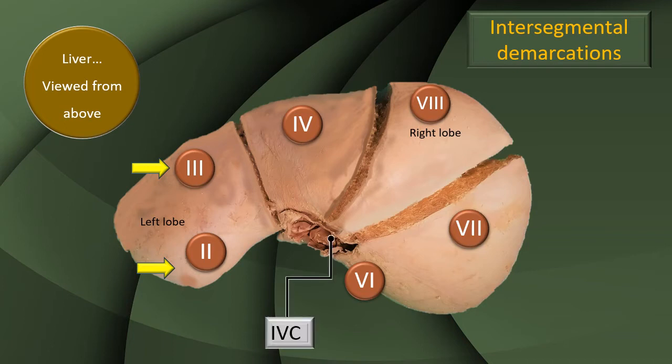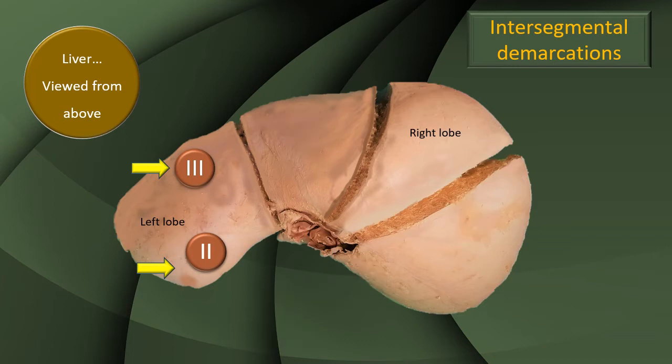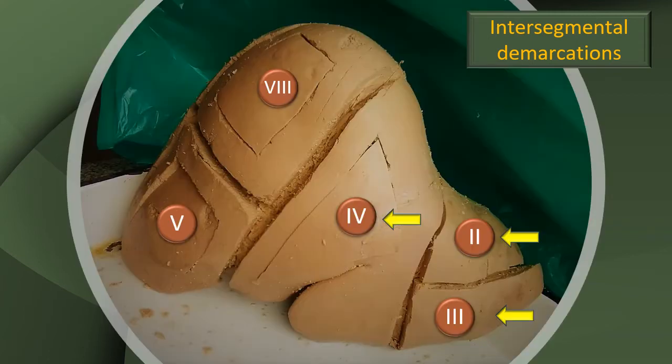The focus is now on the segments of the left lobe. This is as seen from the superior view. Likewise, from the front view, you will notice the yellow arrows are the segments in focus for today's discussion — Segment 4, Segment 3, and Segment 2. You must be wondering where Segment 1 is. We will come to that.